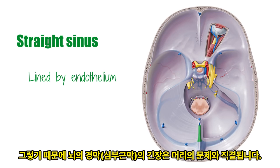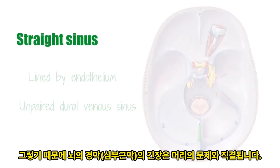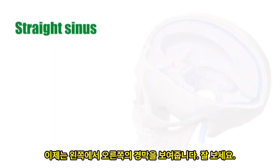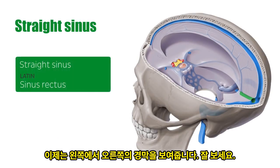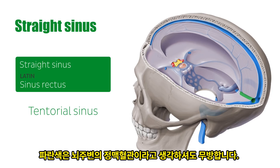The straight sinus is an unpaired dural venous sinus. The straight sinus, or sinus rectus in Latin, is also known as the tentorial sinus. It lies within the dura mater along the superior surface of the tentorium cerebelli, where the perpendicular falx cerebri forms a junction with the midline of the tentorium cerebelli.